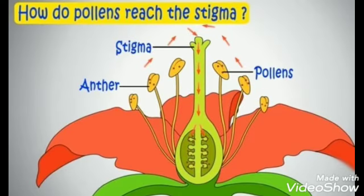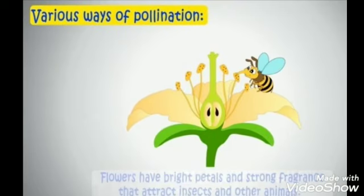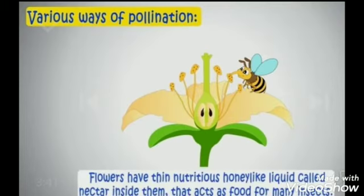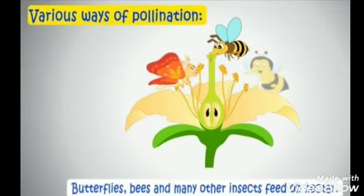Now let's learn how pollens reach the stigma. There are various ways of pollination. Flowers have bright petals and strong fragrance that attract insects and other animals. Also, flowers have a thin nutritious honey-like liquid called nectar inside them that acts as food for many insects. Butterflies, bees and many other insects feed on nectar, so they visit the flower to suck nectar.